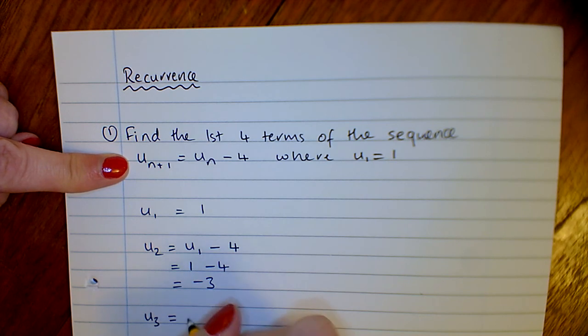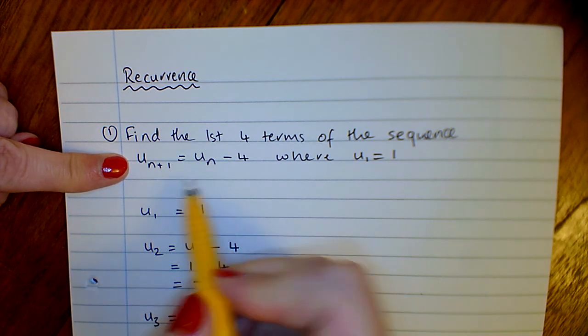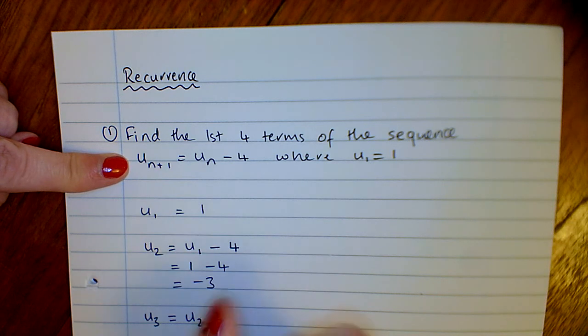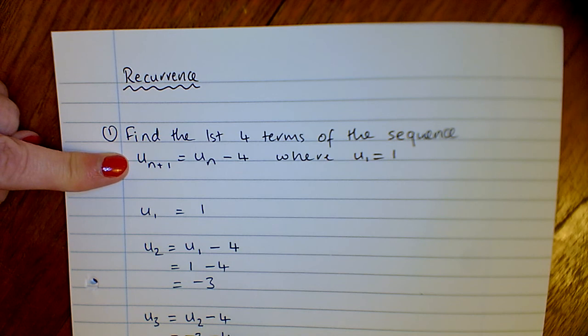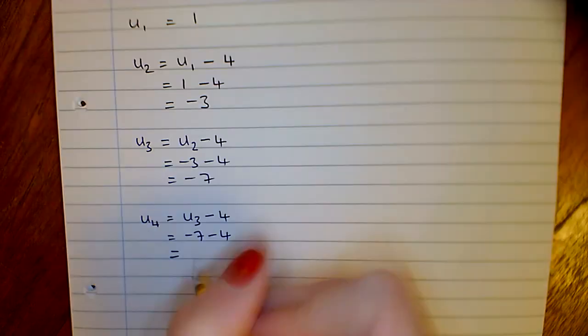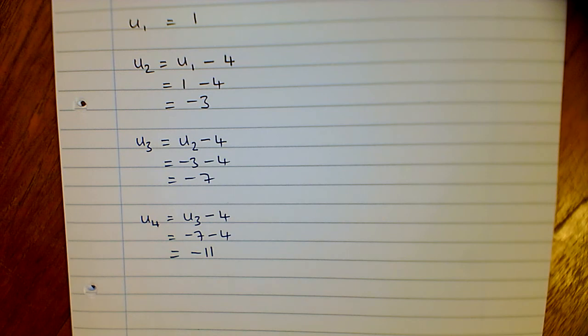Our third term is going to be our second. See the way this is always one less than the one that we're finding. So minus 3, minus 4, minus 7. And our fourth term is our third term, take away 4. So minus 7, minus 4, which is minus 11.